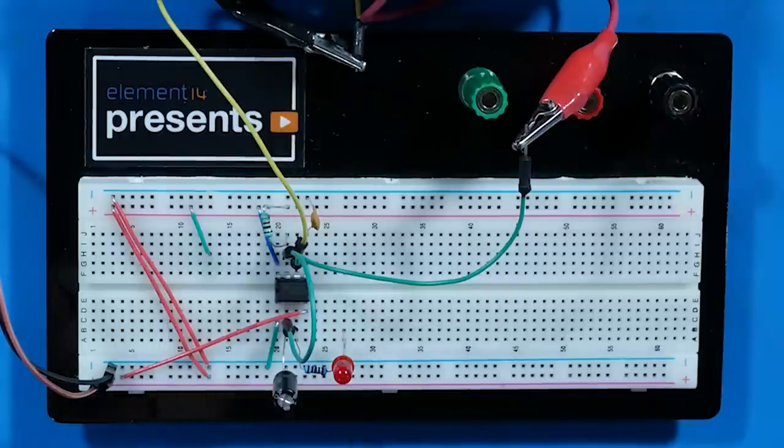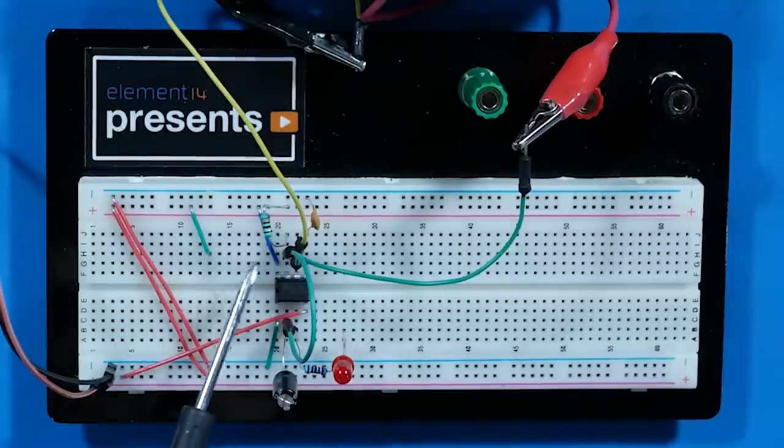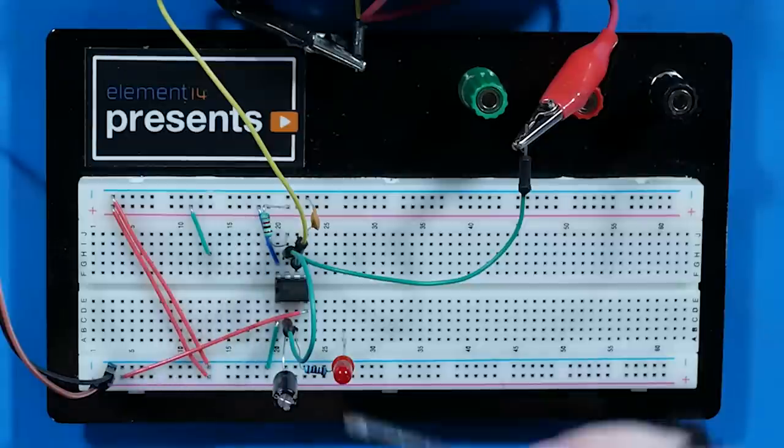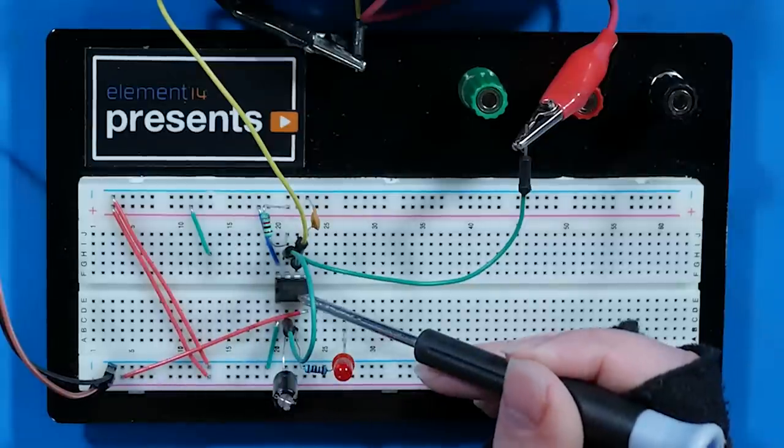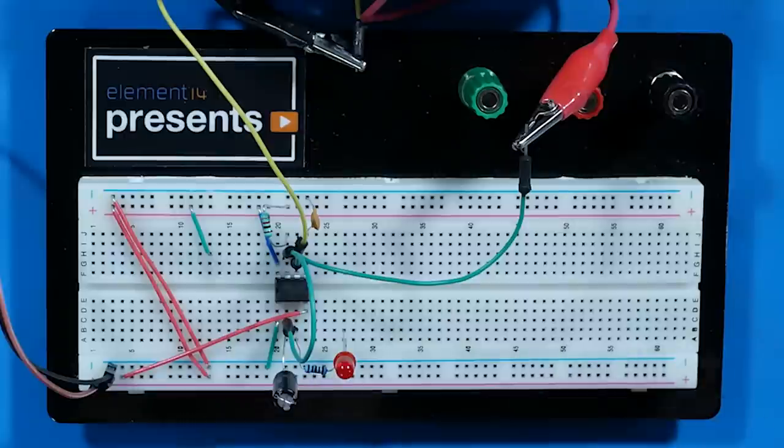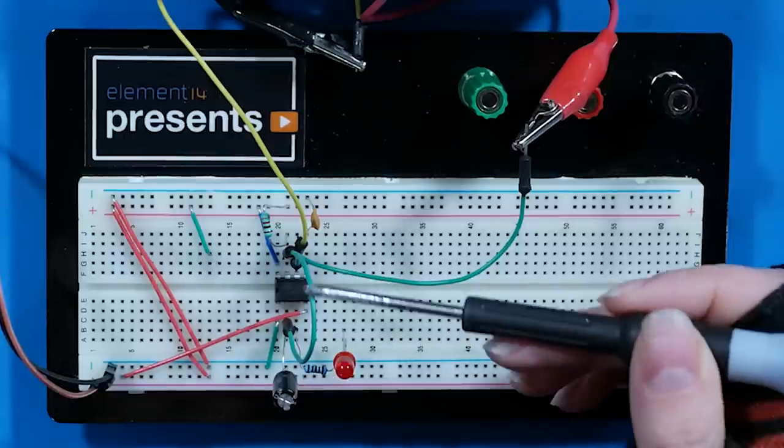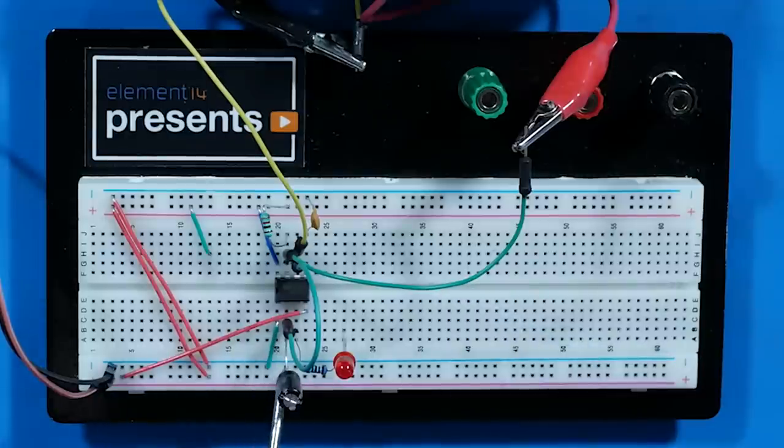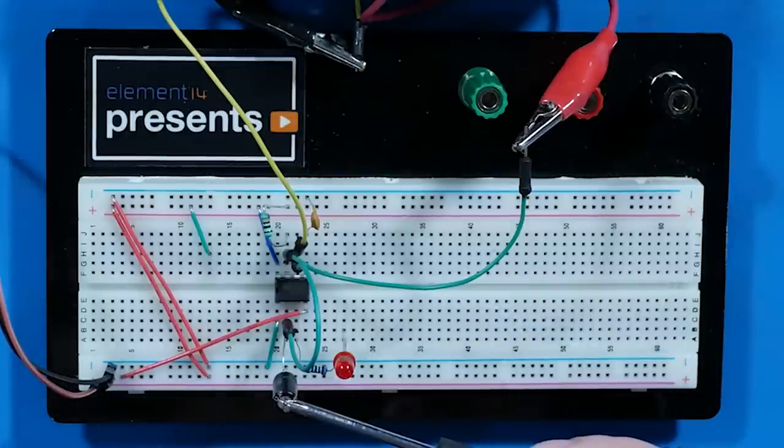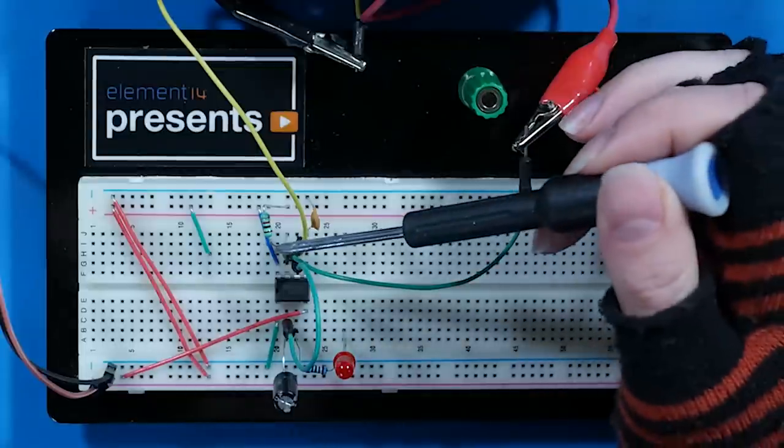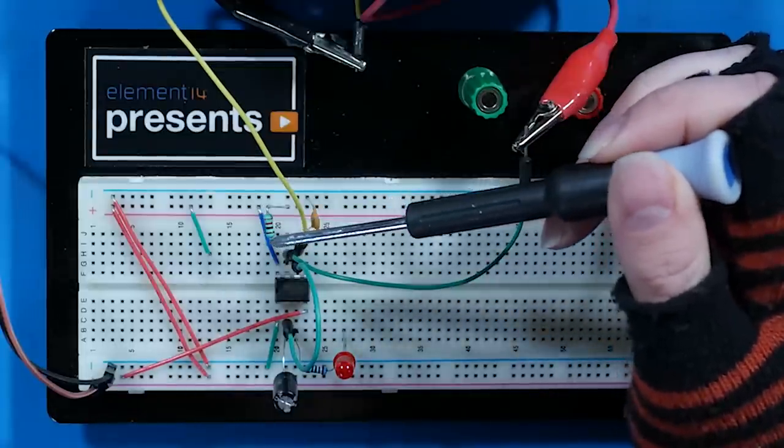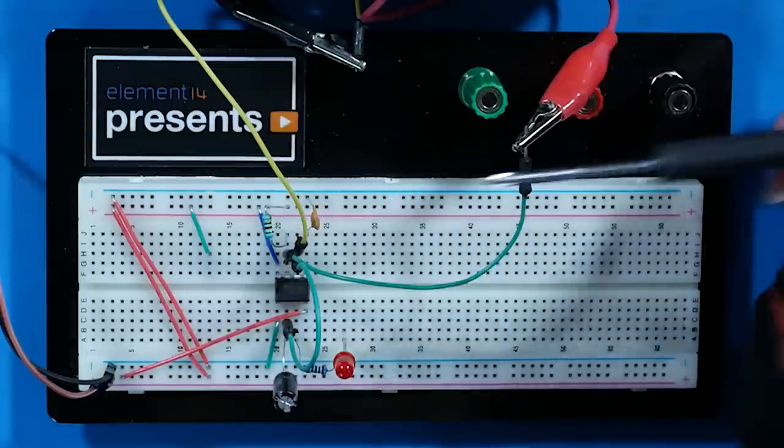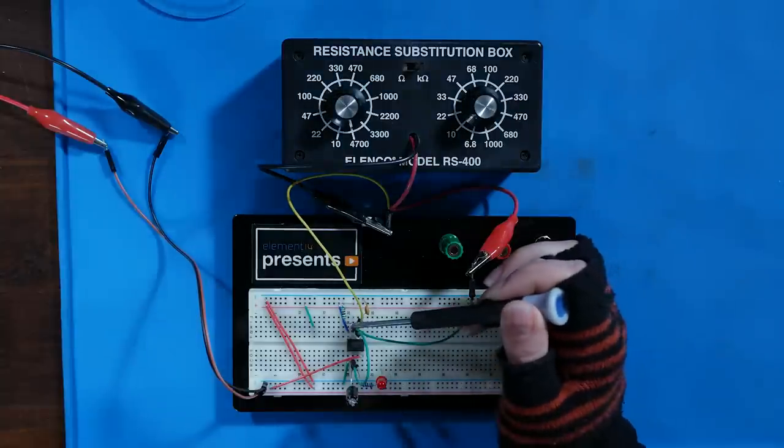Here's our astable circuit. Pin 1 is connected to ground, while pin 8 is connected to VCC. Pin 3, our output, connects to an LED with a resistor. Pins 2 and 6 are tied together, while pin 2 connects to ground with this 100 microfarad capacitor. Pin 6 connects to VCC with this 1k ohm resistor. And connecting pins 6 and 7, I have my resistance substitution box set up so I can easily switch the values.